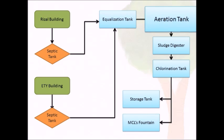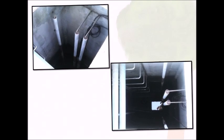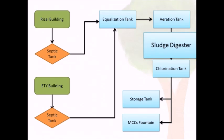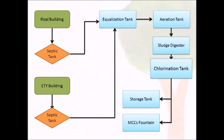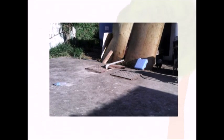After the equalization tank it will go to the aeration tank, where the water treatment is done by a network of tube-tight fine bubble diffusers. The sludge digester tank allows the sludge to settle to the bottom so that water will be separated from it. The chlorination tank will treat the water that came from the settlement tank, to disinfect it and make it ready for storage or disposal.